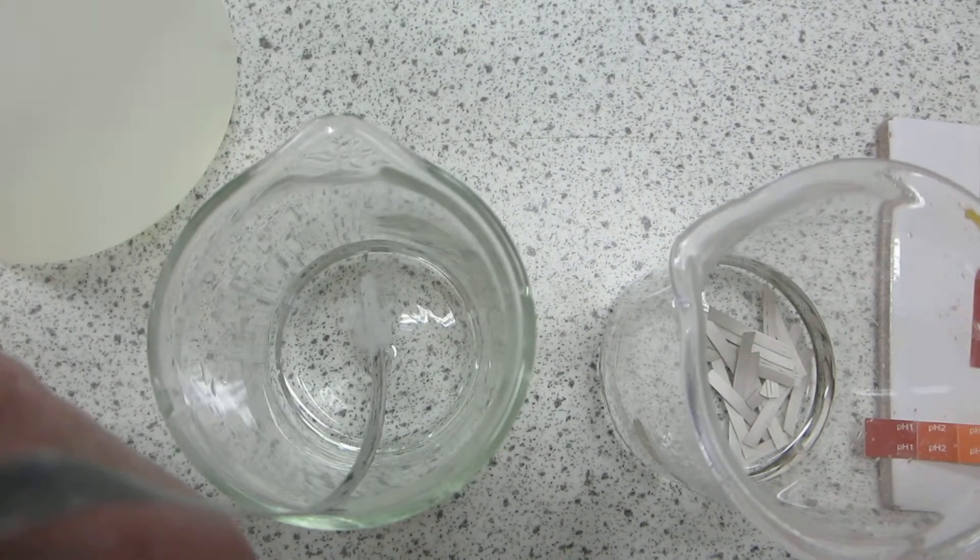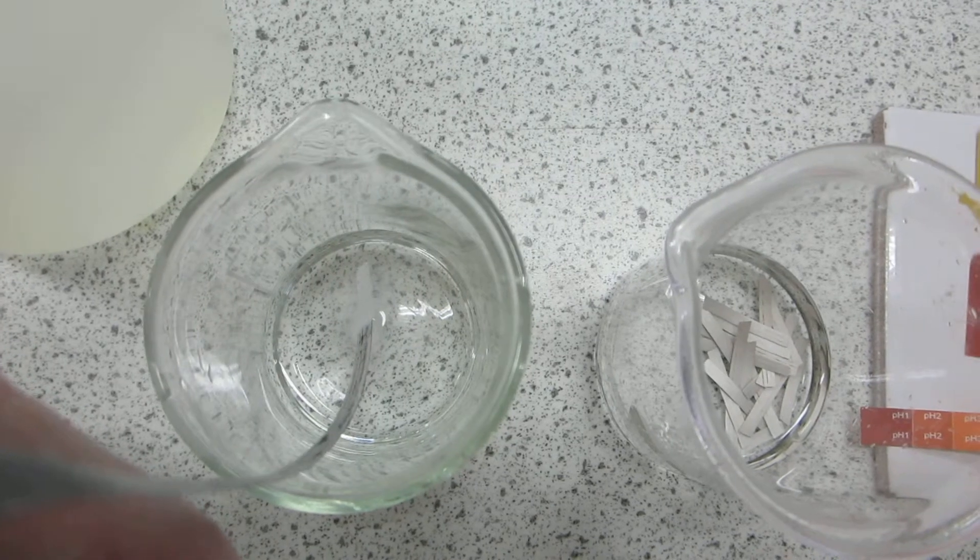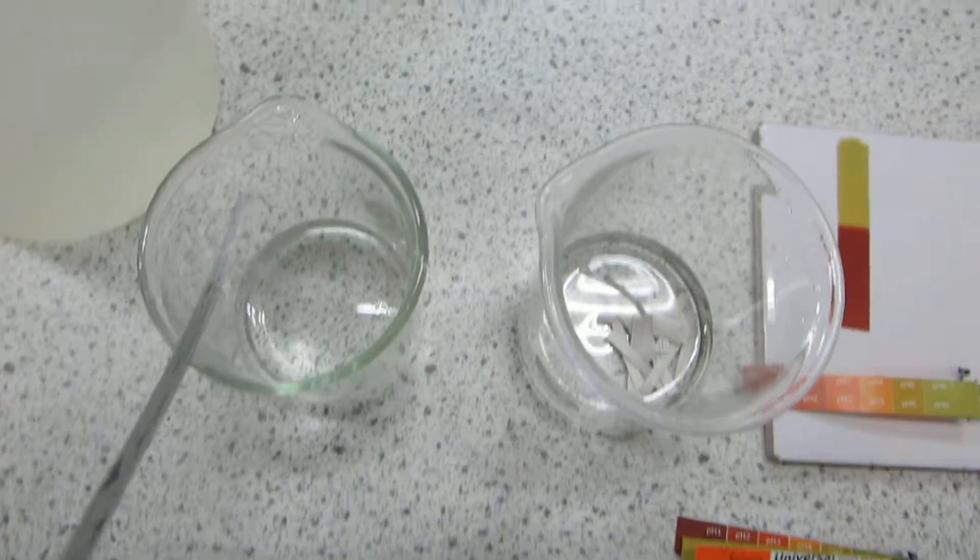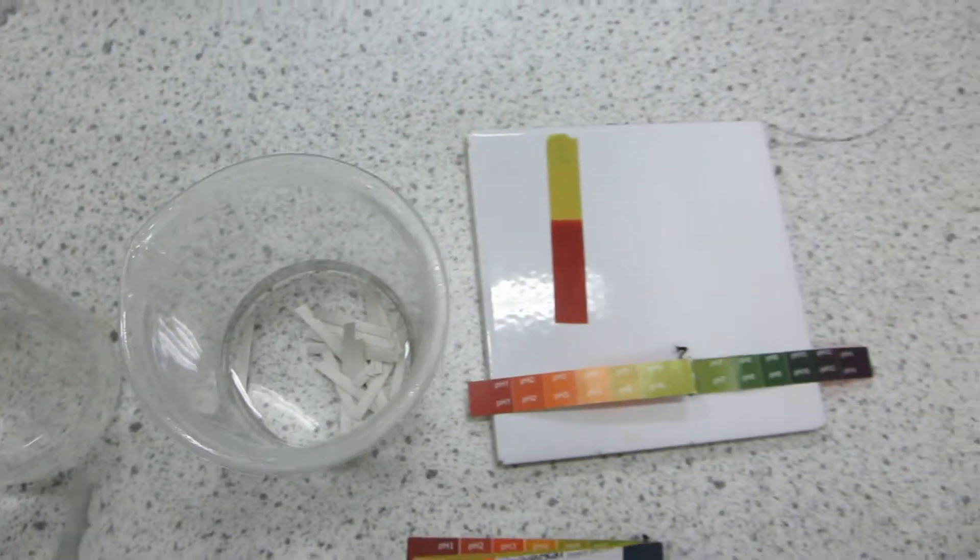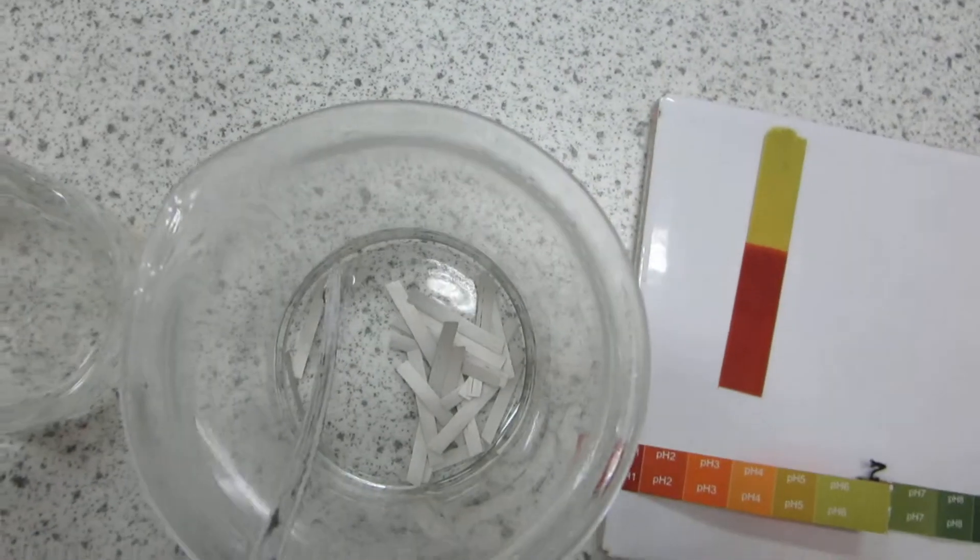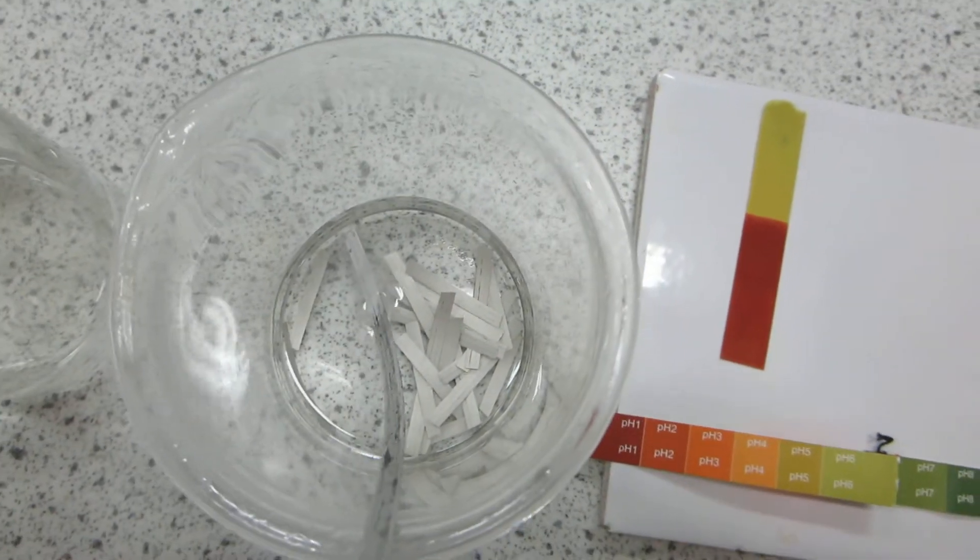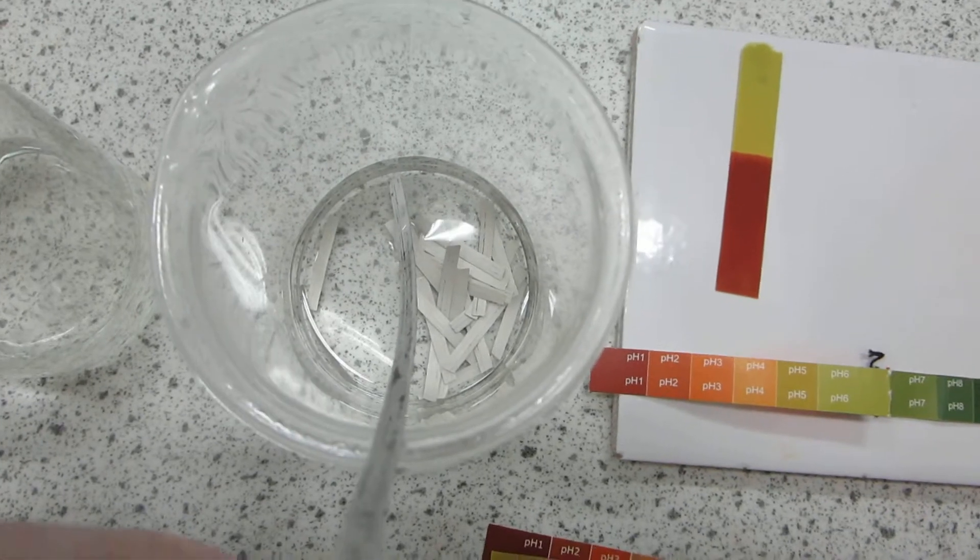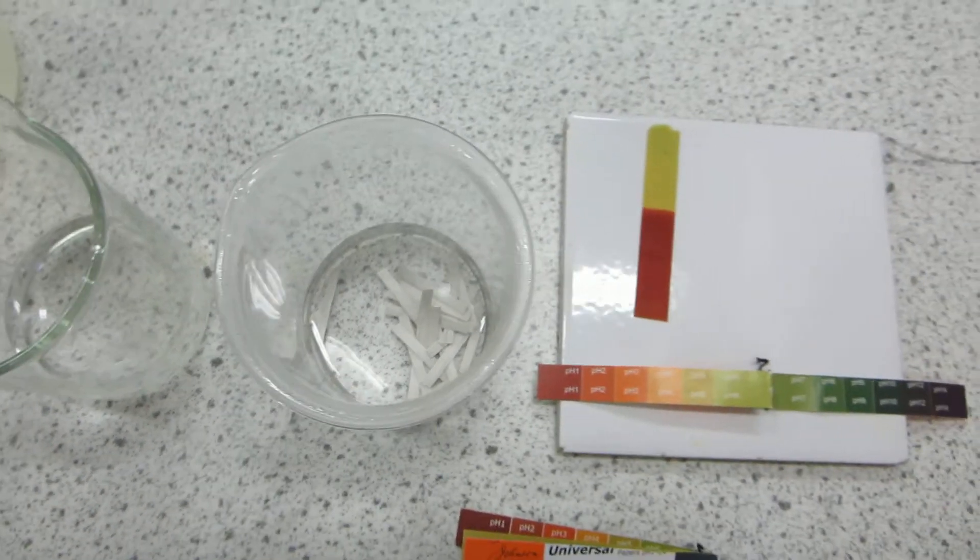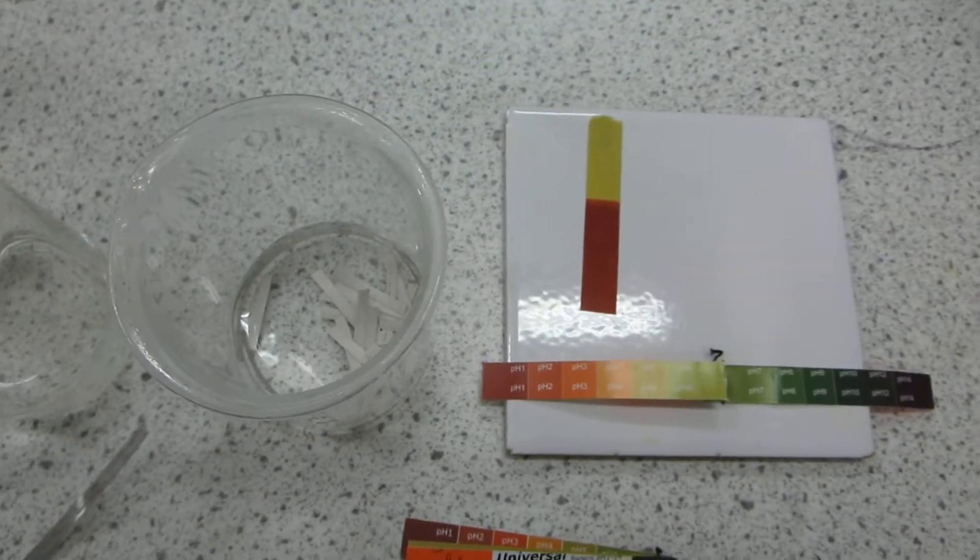The metal reacts with the acid there, and if you leave it overnight, the activity decreases until all the acid has reacted with the metal. So what's the pH after the metal has reacted with the acid?